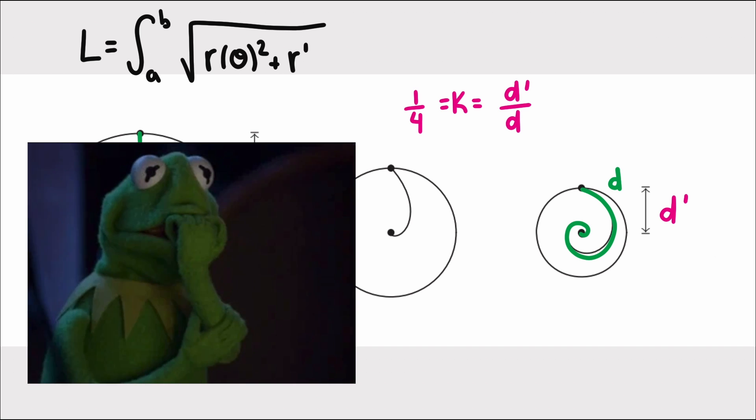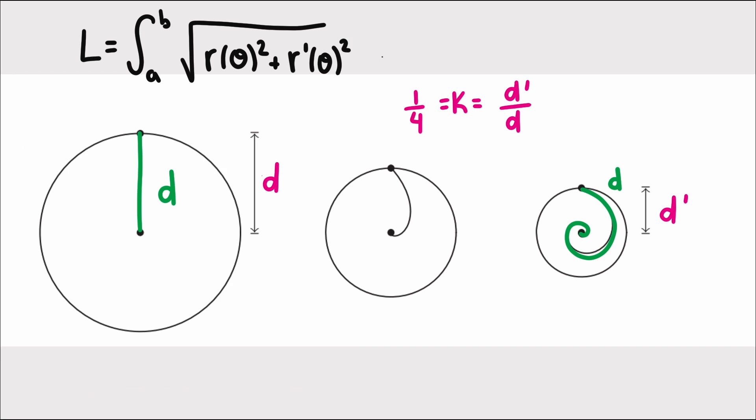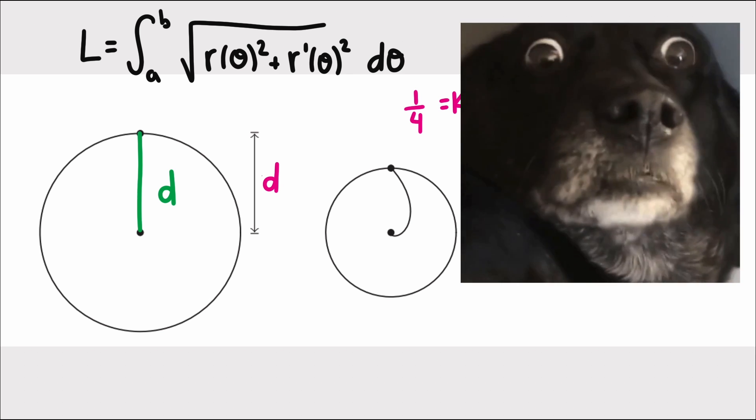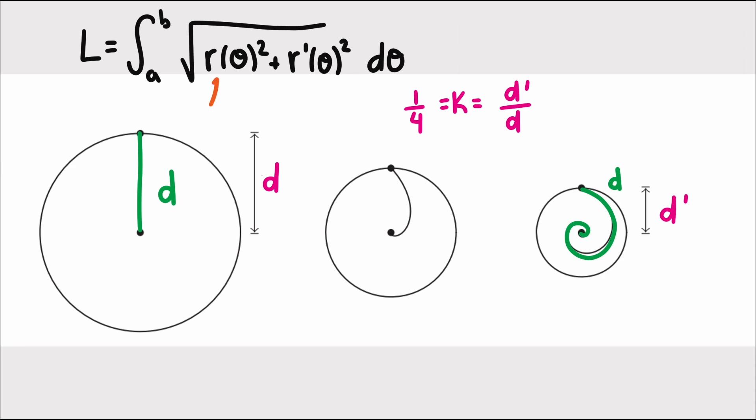If you haven't had calculus, it can look scary, and if you have had calculus, it still probably looks scary. The length depends on the value of the polar curve and the derivative of the curve, and it involves an integral, which we can think of as adding up lengths of tiny pieces of the line to get the total arc length of the curve. With this formula and assumptions, I could connect the length of three things.